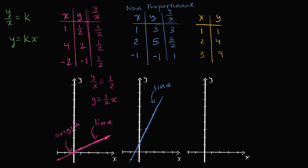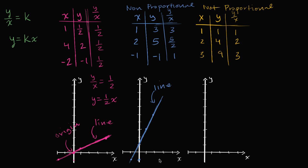Now let's look at the third relationship. Looking at the y-over-x ratios: for the first pair it's one over one, which is one; then four over two, which is two. We immediately see these are not equal, so it's not proportional. And nine over three would be three — clearly not a constant value. So this is also not proportional.